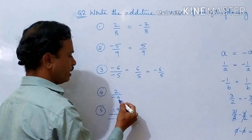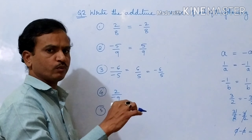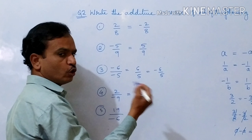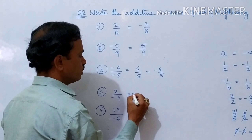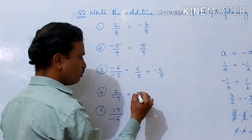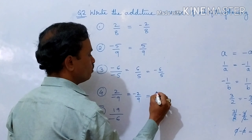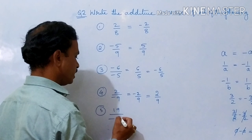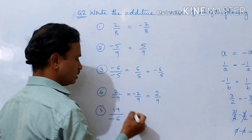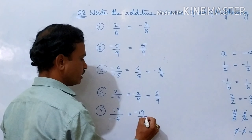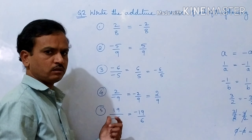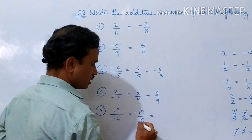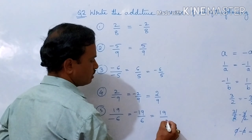Now 2 by 2 divided by minus 9: the minus should always be in the numerator. Here it is given in the denominator, so first we convert it — we take minus in the numerator — giving minus 2 by 9. The additive inverse of minus 2 by 9 is plus 2 by 9. Similarly, 19 by minus 6: we write it as minus 19 by 6, and the additive inverse of minus 19 by 6 is plus 19 by 6.